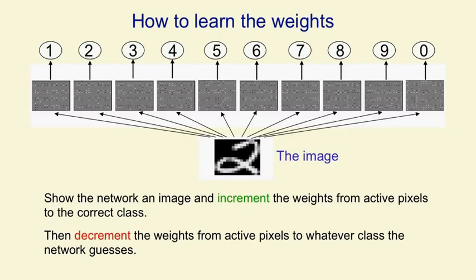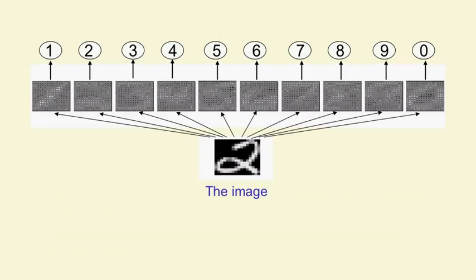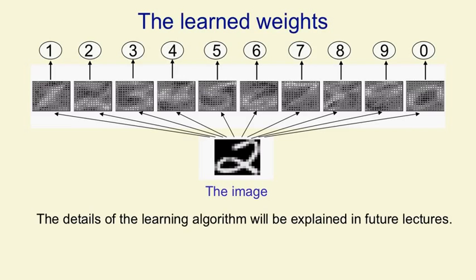So those are the initial weights. Now we're going to show it a few hundred training examples and then look at the weights again. The weights have changed — they've started to form regular patterns. We show it a few more hundred examples and the weights have changed some more, and after a few more hundred examples the weights are pretty much at their final values. The weights now look like little templates for the shapes.